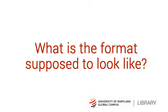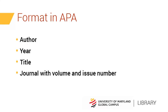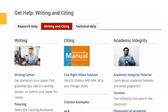What is the format supposed to look like? You will want to use the standard format type for the resource you are using. For example, an article in APA should have this order: author, year, title, journal with volume and issue number, pages. Other citation styles use similar elements and possibly additional ones, such as the URL, in different orders. Please check our Citing and Writing Guides for details about the citation style you are using.